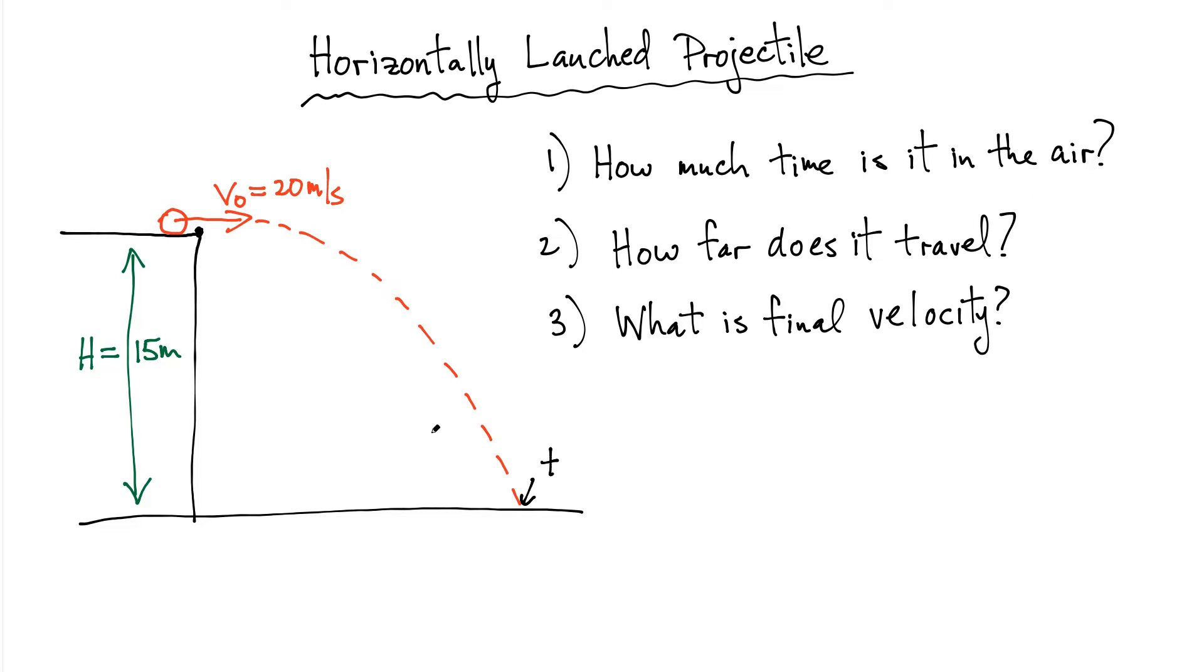How far does it travel? That's an easy question. It travels this distance over here, and that's going to be measured from the edge of the cliff. And what's its final velocity? Well, its final velocity is going to be down here right the instant before it hits the ground, and it's going to be moving at some velocity v. It's going to be different than 20 meters per second.